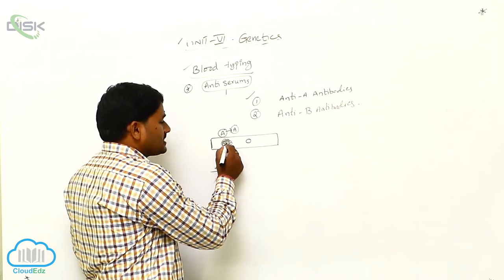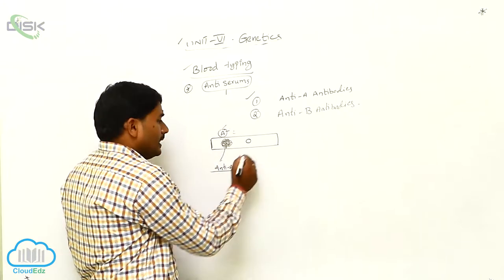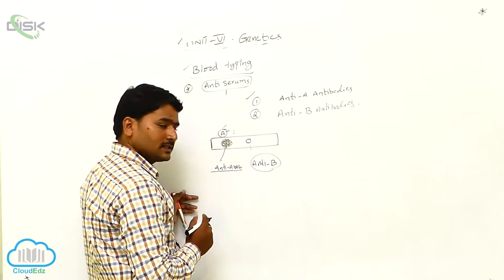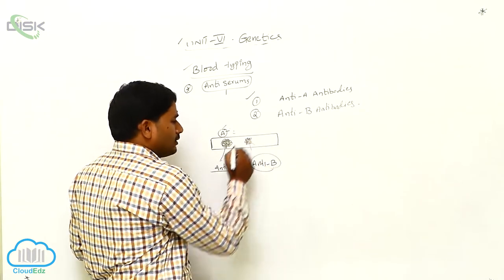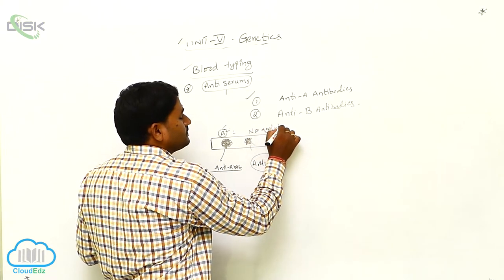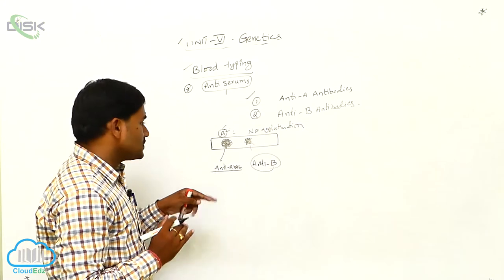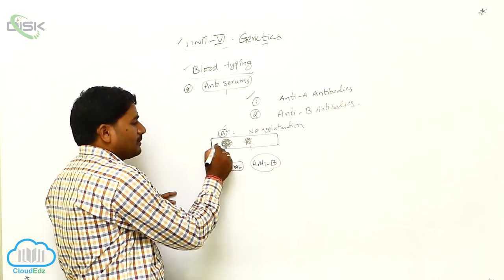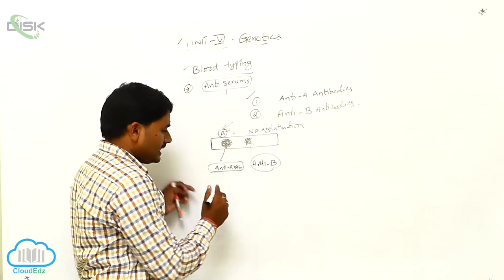Anti-A antibody is causing agglutination. What is the antigen present here? A. When you are adding anti-B antibodies and if it is not forming any agglutination — no agglutination — only anti-A antibody serum is forming agglutination. So what is the antigen present in the blood? A.